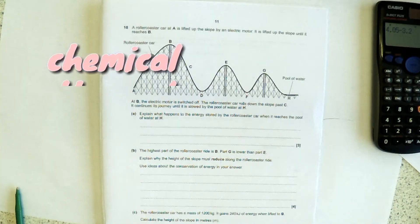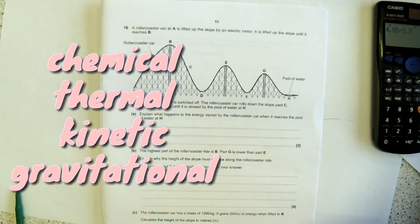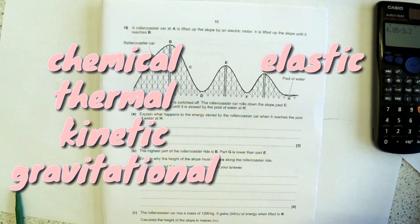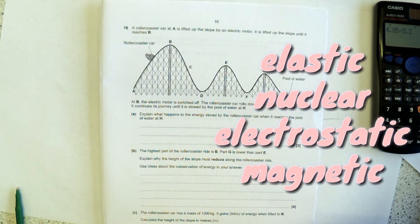So the eight stores are chemical, thermal, kinetic, gravitational, elastic, nuclear, electrostatic and magnetic.